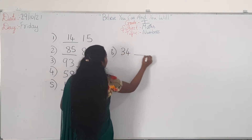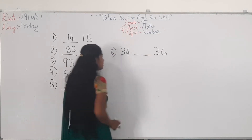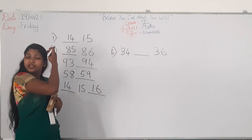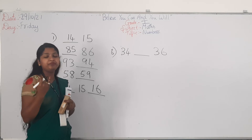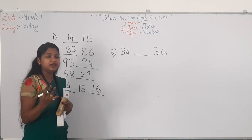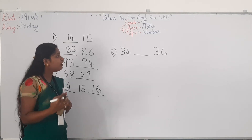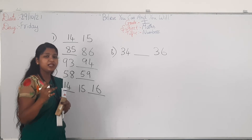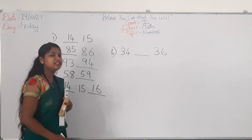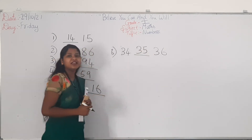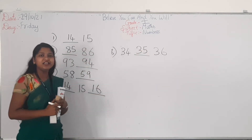See: 34 blank 36. Which is the number between 34 and 36? Count from 31: 31, 32, 33, 34, 35, 36. So, which is the number between 34 and 36? It is 35.